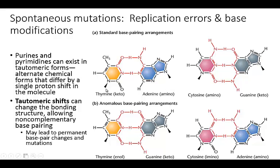Here we have a T and an A binding — this is the normal bonding — and a C and G bonding. With just a small shift, instead of a double-bonded O, you have a single bond and a double bond between the carbon and nitrogen. Now you have three hydrogen bonds, and the T can bind to a G instead. If that persists after replication, that could be a point mutation. Similarly, this cytosine, instead of having a double-bonded carbon to nitrogen, becomes single-bonded, resulting in only two hydrogen bonds, and it will bind with an adenine instead of the guanine.